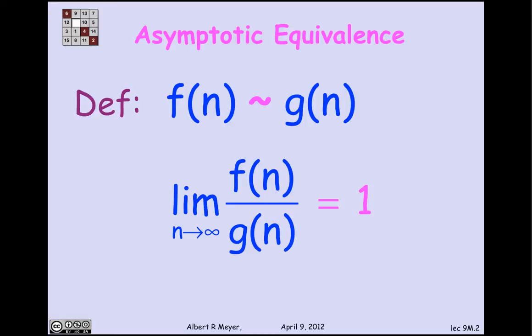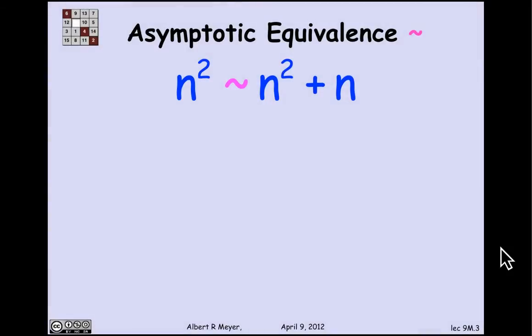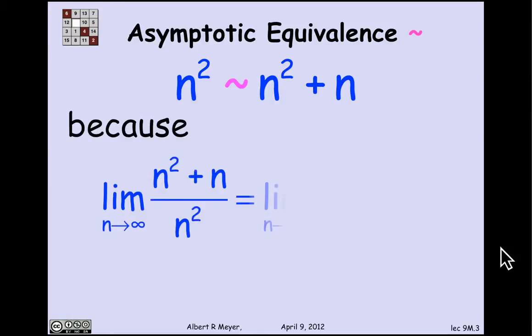Let's look at an example. n² is asymptotically equal to n² + n. Why is that? It follows trivially by manipulating the algebra. The limit of (n² + n)/n² simplifying is just the same as the limit of 1 + 1/n. But as n goes to infinity, 1/n goes to 0, so the limit is 1 as claimed. Those two functions n² and n² + 1 are asymptotically equal.